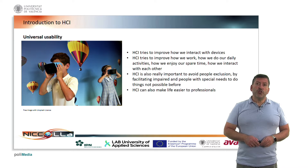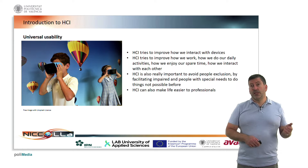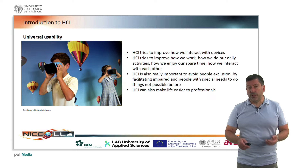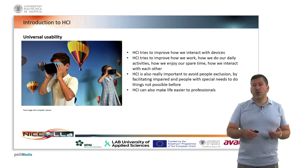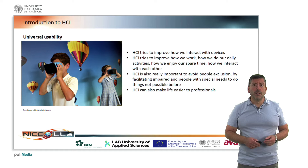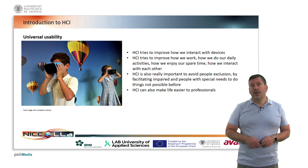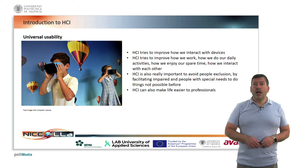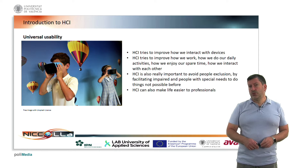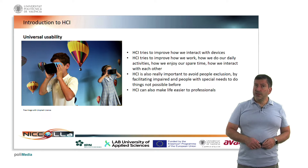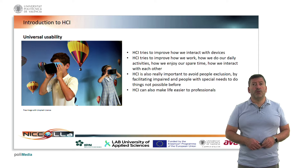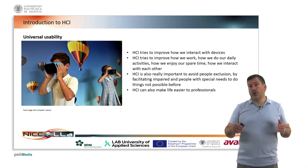We try to achieve something known as universal usability. In human-computer interaction, we try to improve how we interact with devices, and as a consequence, how we can improve how we work, how we do our daily activities, how we enjoy our spare time, and how we interact with each other. Human-computer interaction is also really important to avoid people exclusion, by facilitating impaired people and people with special needs or some kind of dependency to do things not possible before.